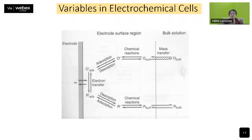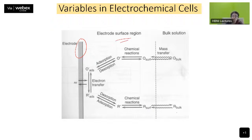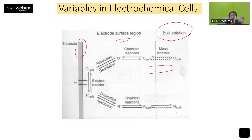Let's look at the different regions where reactions take place in an electrochemical cell. At the electrode surface region, electron transfer, adsorption/desorption, and chemical reactions all occur. In the bulk solution, mass transfer is happening. All these different regions lead to concentration gradients developing, which will affect the ideal cell performance. Many variables will make your cell behave a little differently than it would in an ideal circumstance.